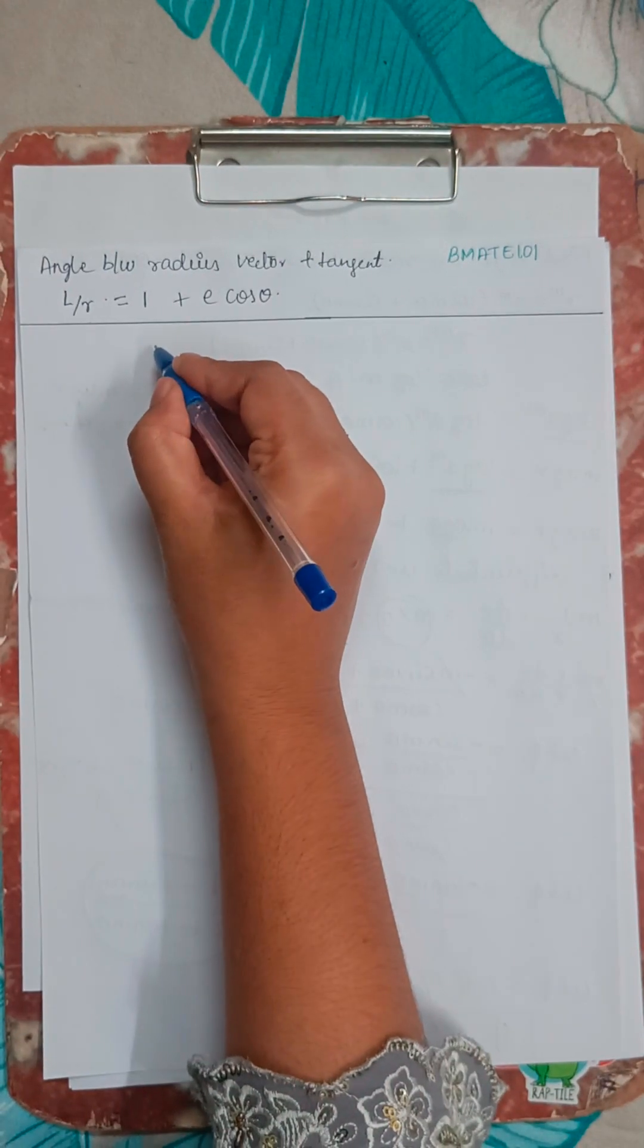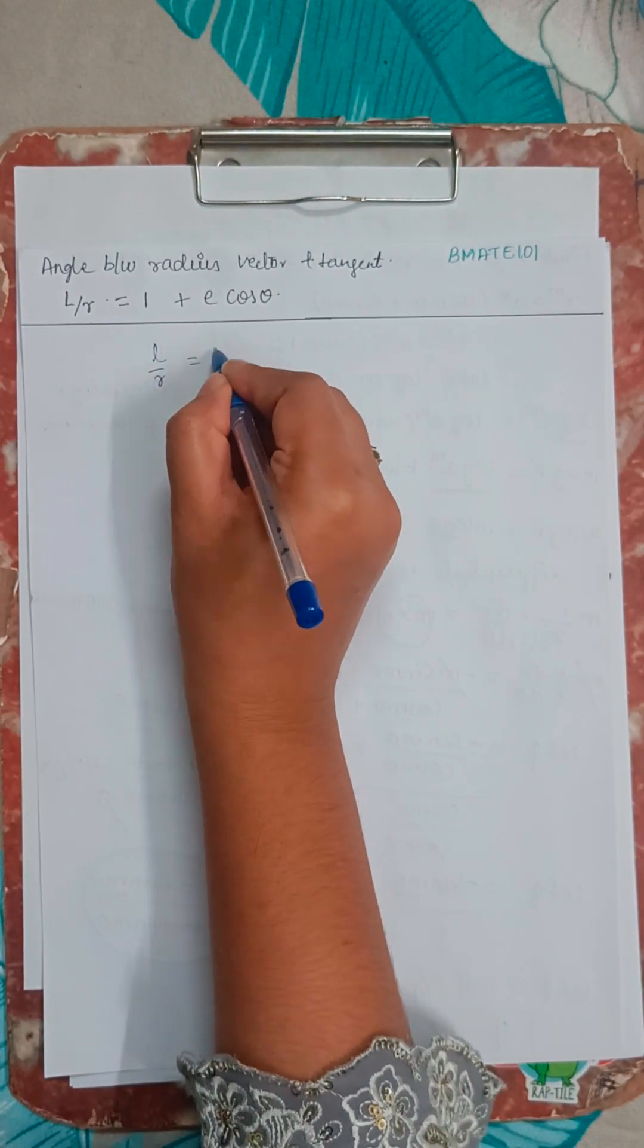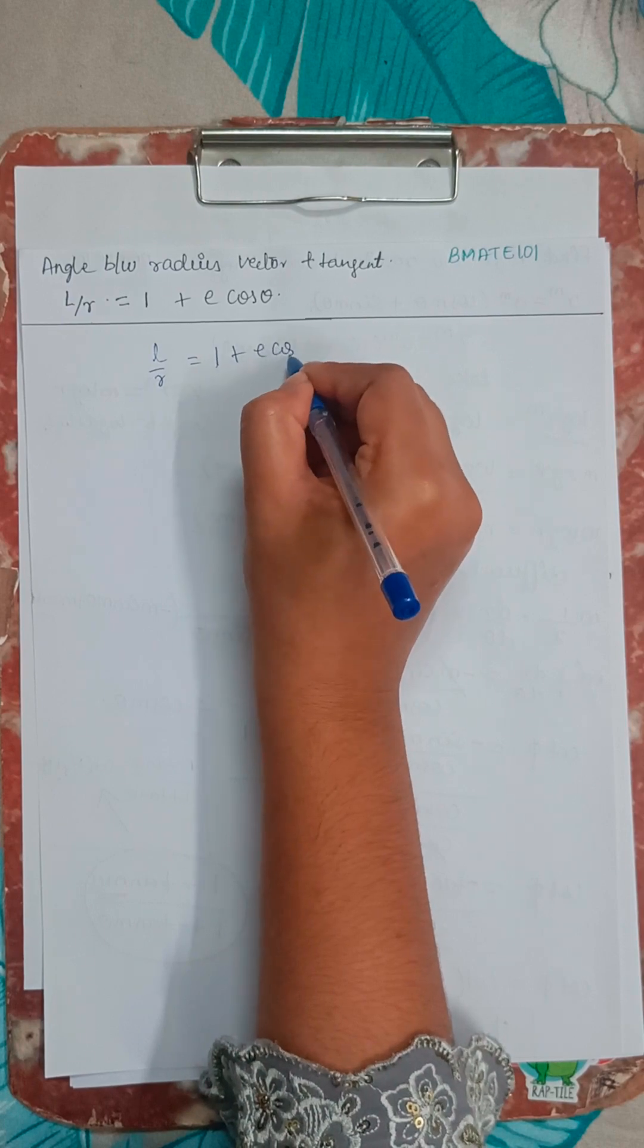Hello everyone, welcome back to my video. So in this video we will be finding the angle between the radius vector and the tangent for the curve L by R is equal to 1 plus A cos theta.